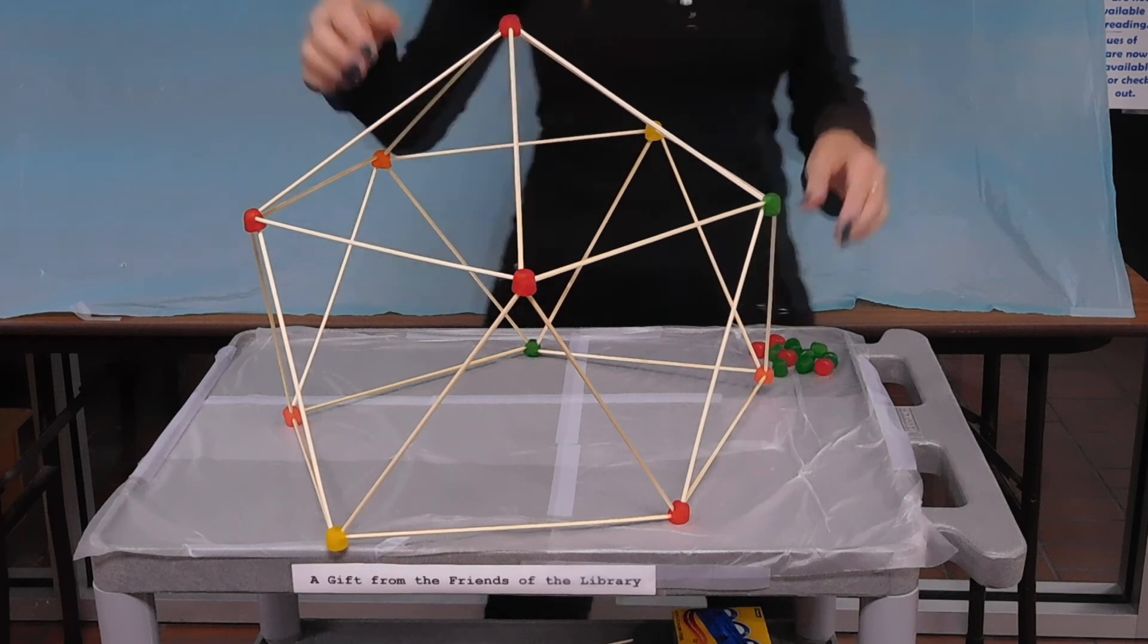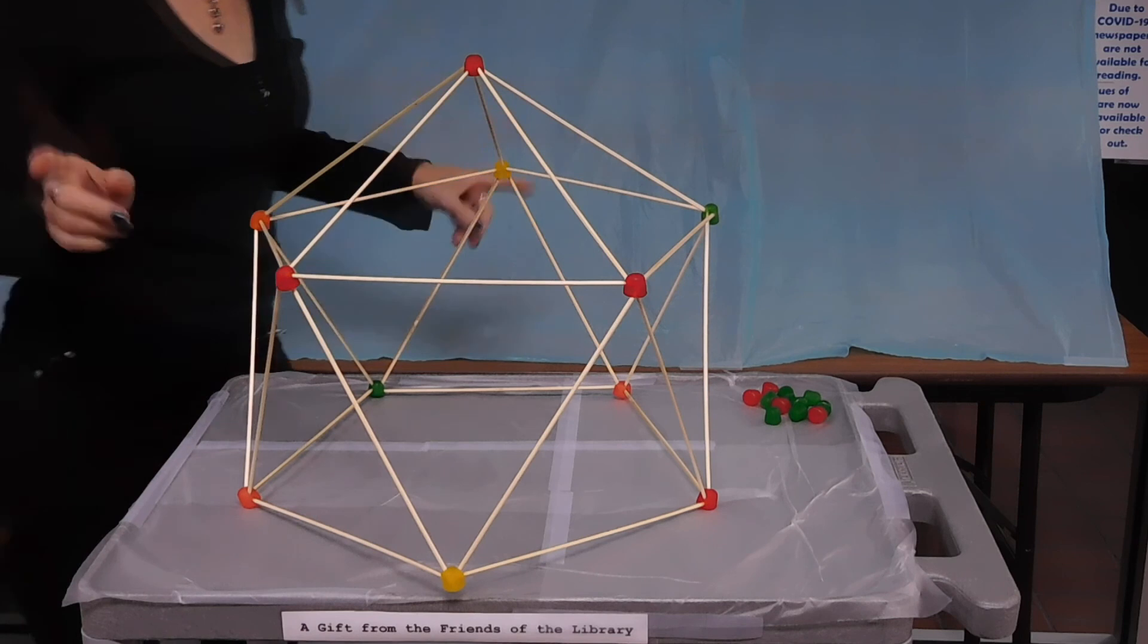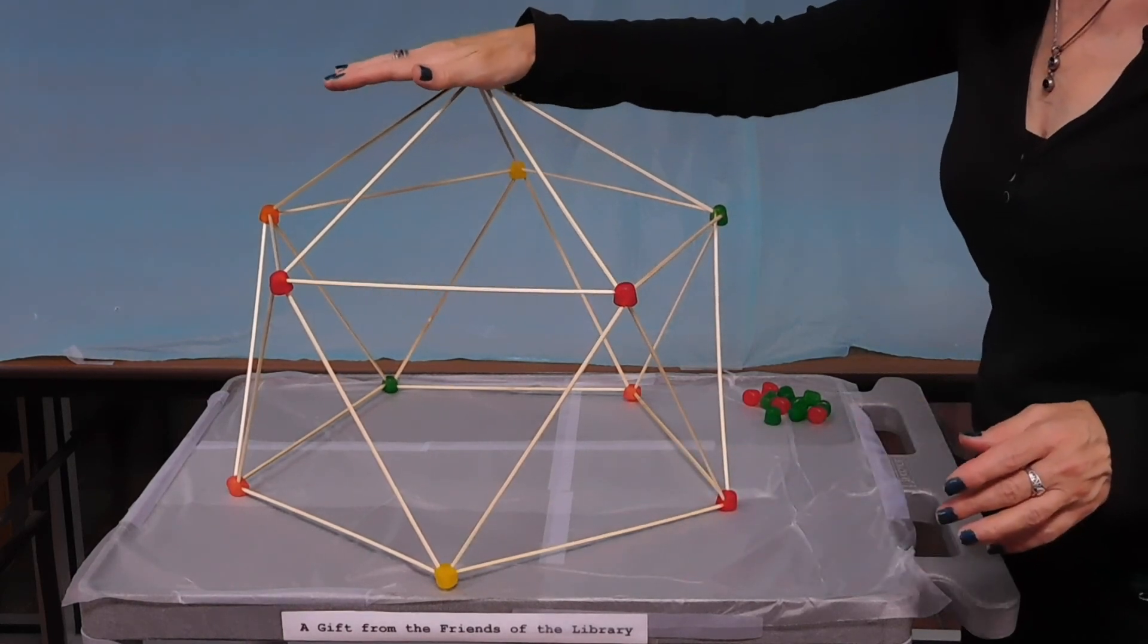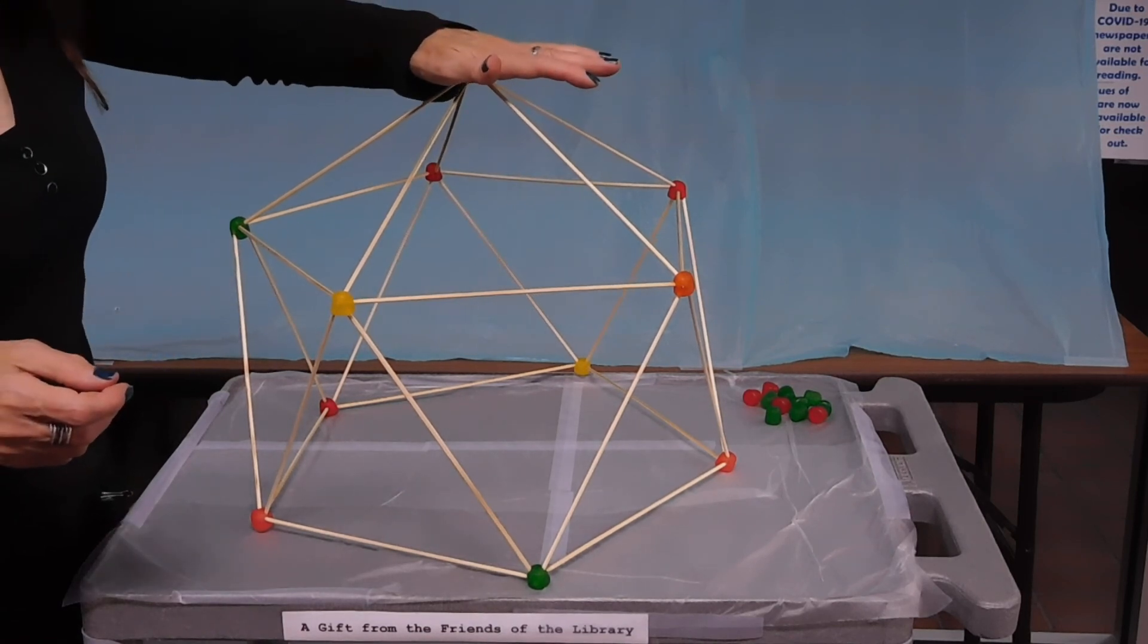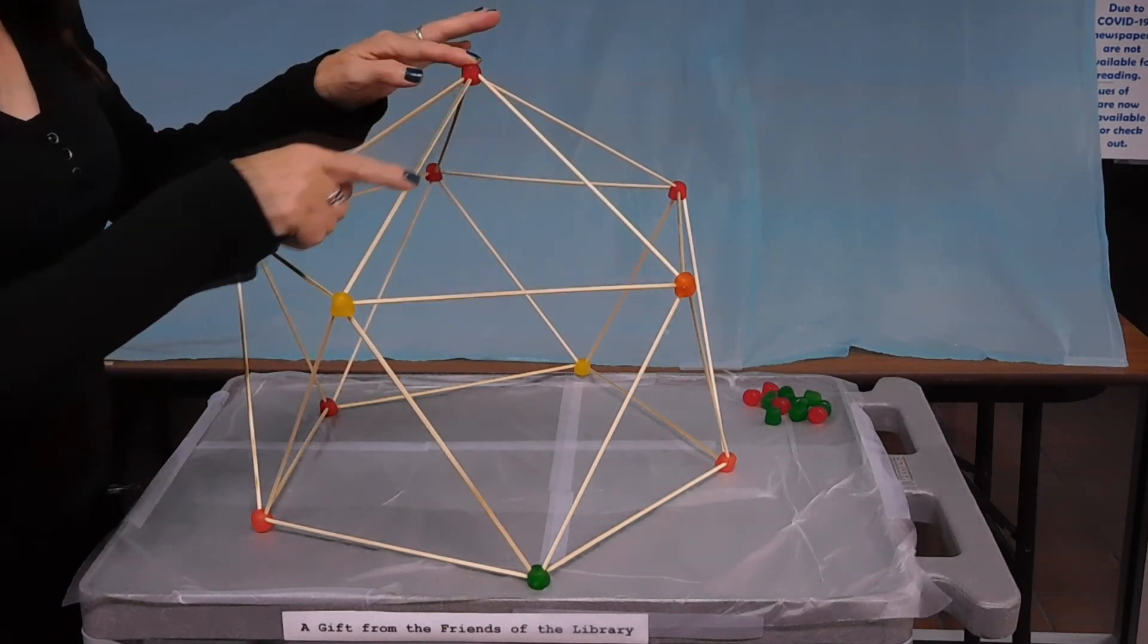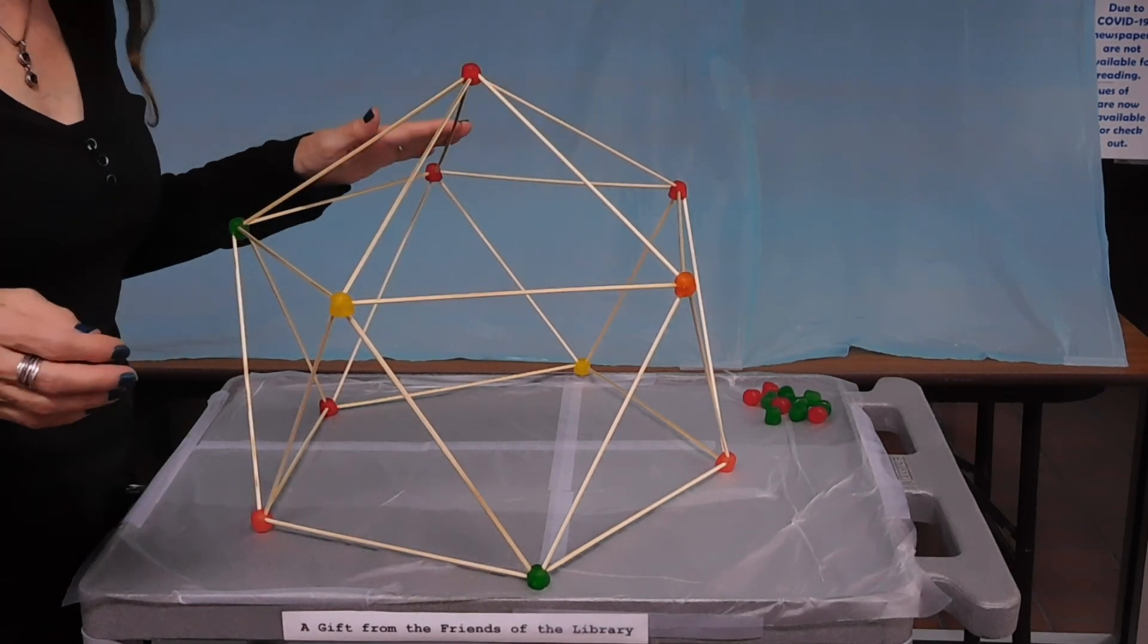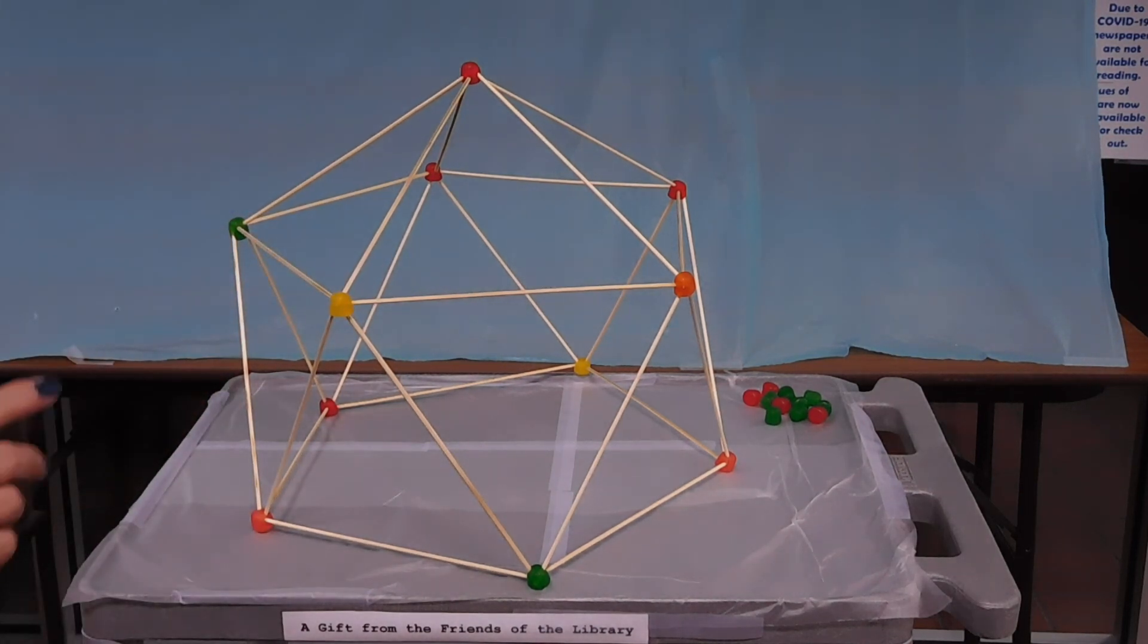And voila! Our completed geodesic dome. Now, if you remember, I said the beauty of the geodesic dome is its ability to bear weight, and it is bearing quite a bit of weight there. The reason for that is because when I push down, the weight is transferred by each of the triangles across the whole structure. So it's not any one part of the geodesic dome that is bearing the weight. It is the whole geodesic dome that bears the weight.